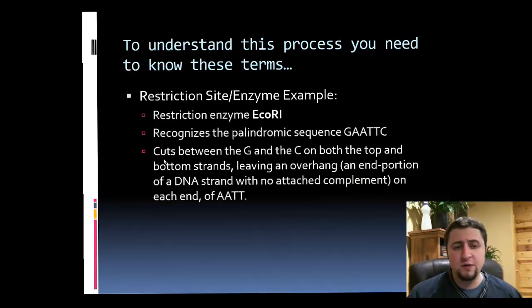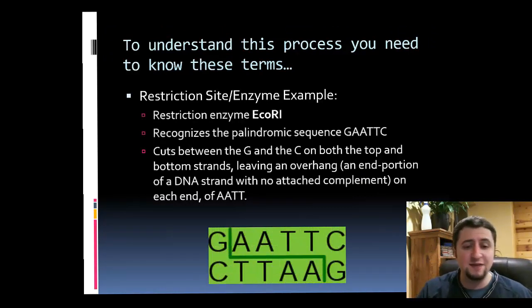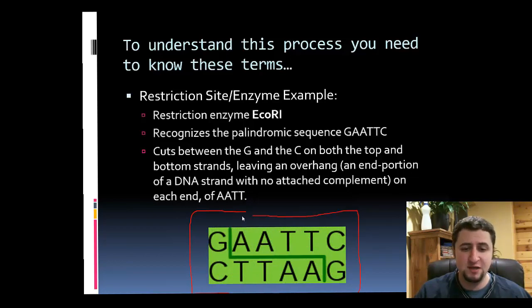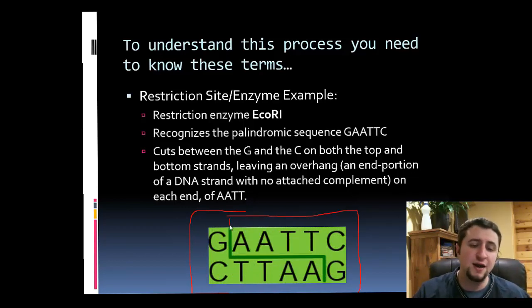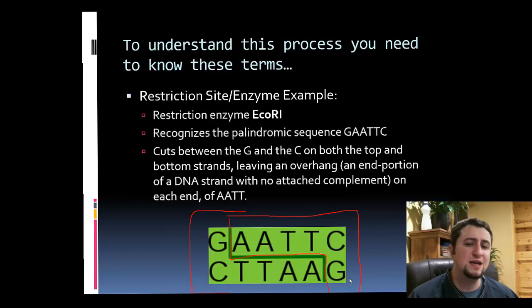Here we have a segment of DNA, and this whole section in green is the restriction site. The enzymes come in and chop right in between the DNA, so ultimately we get two segments of DNA that are kind of staggered. Don't worry if you haven't fully understood this concept of restriction enzymes and restriction sites — we're going to focus on that a lot more in class.